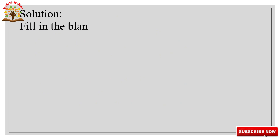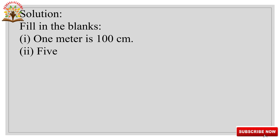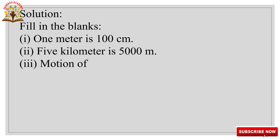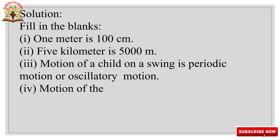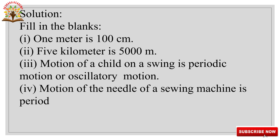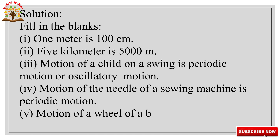Solution for Fill in the Blanks: 1) 1 meter is 100 centimeters. 2) 5 kilometers is 5000 meters. 3) Motion of a child on a swing is periodic motion or oscillatory motion. 4) Motion of the needle of a sieving machine is periodic motion. 5) Motion of a wheel of a bicycle is circular motion.